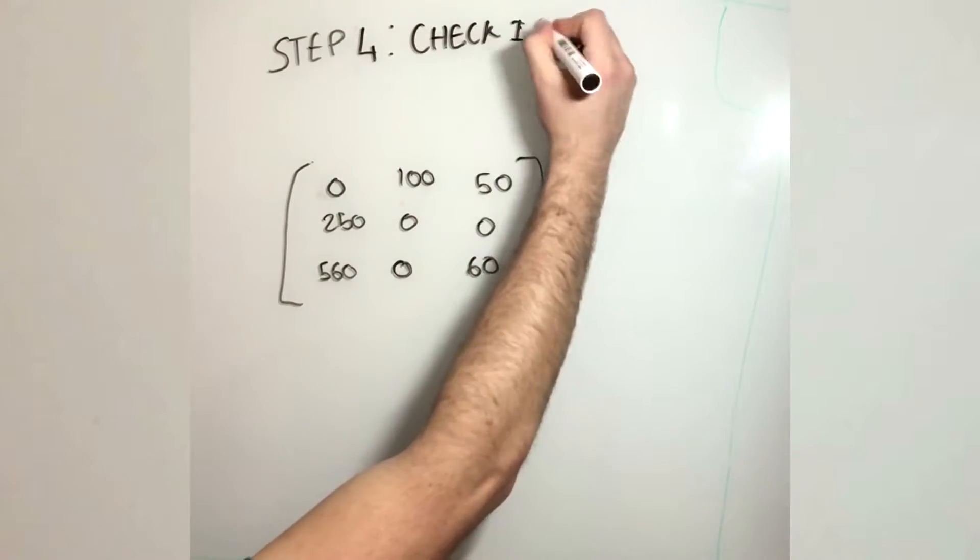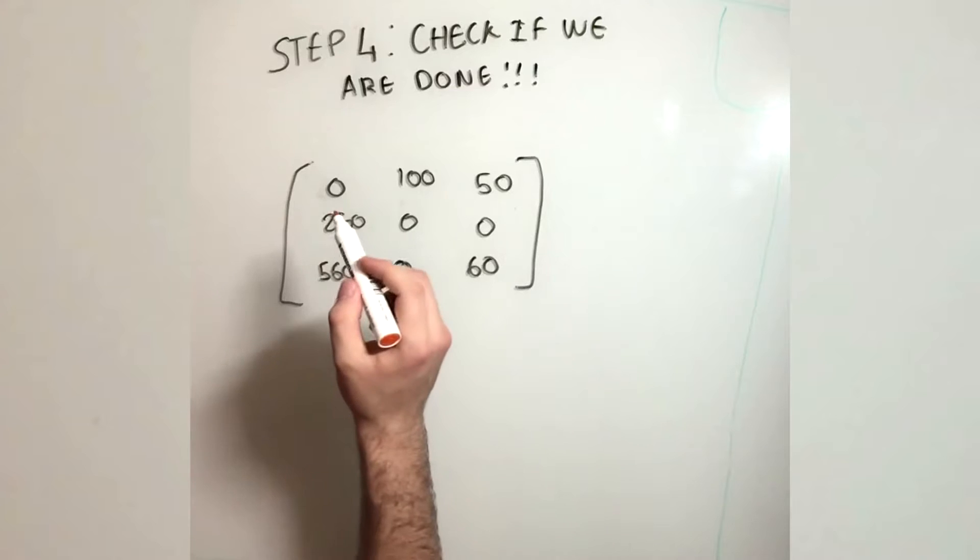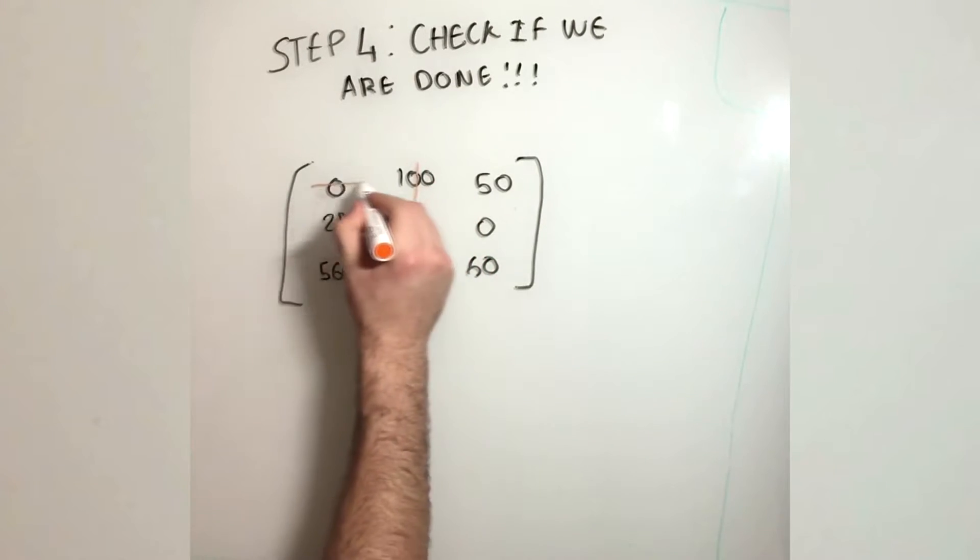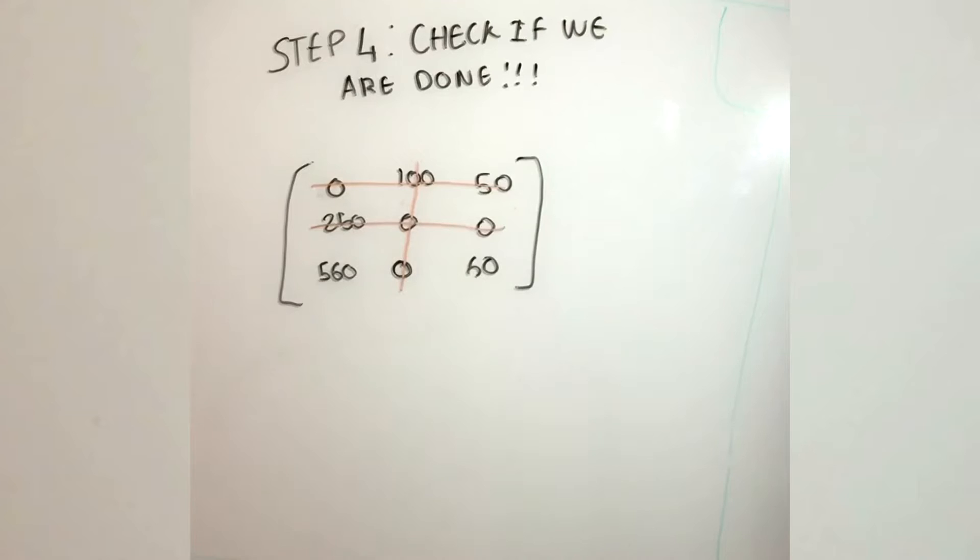Now, for step 4, we check if we are done. Now we need to see if we can put as little lines as possible that go through the zeros and account the number of lines.